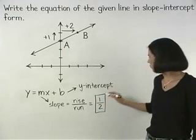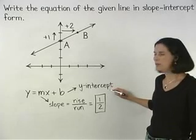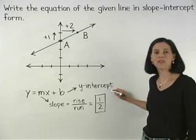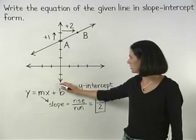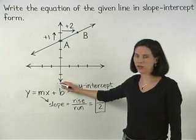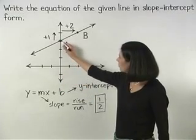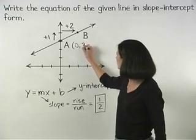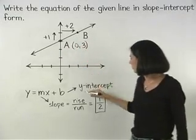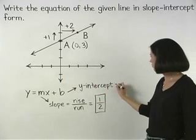Next, to find the y-intercept, remember that the y-intercept is the point where the line crosses the y-axis. And notice that our line crosses the y-axis at the point 0, 3, which means that the y-intercept is 3.